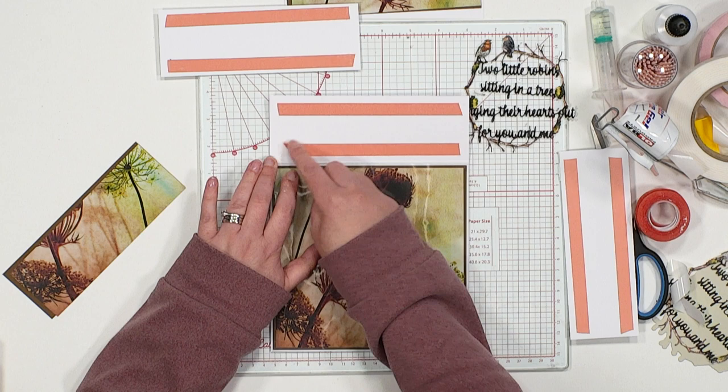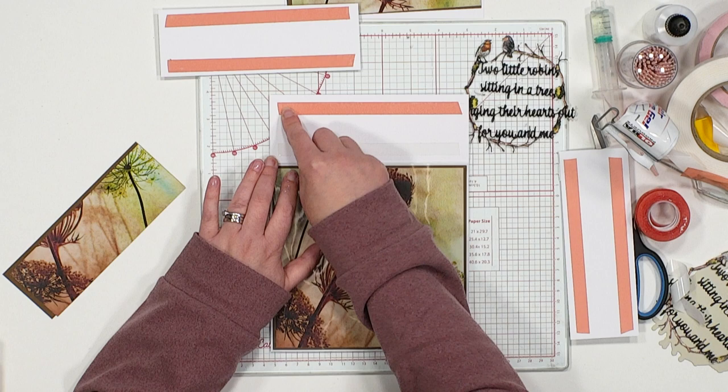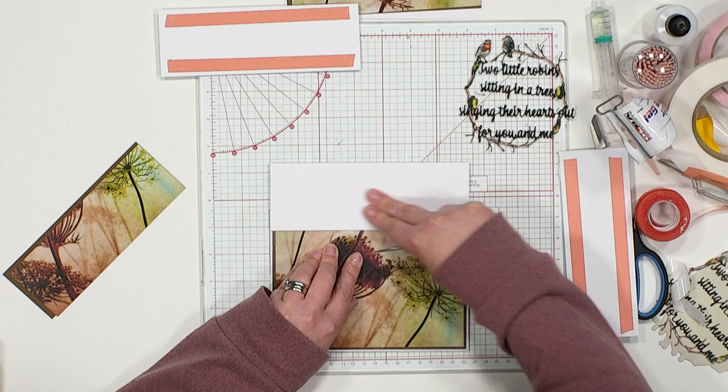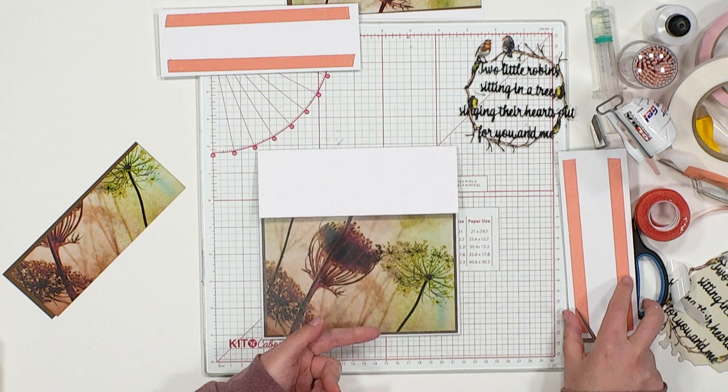Just burnishing that down into place. And then using my poke tool to remove the carrier sheet for the red line tape there as well. If it wants to come away, sometimes it can be a little bit stubborn. There we go. Making sure that's all aligned still on the base and then folding that down and smoothing that into place.